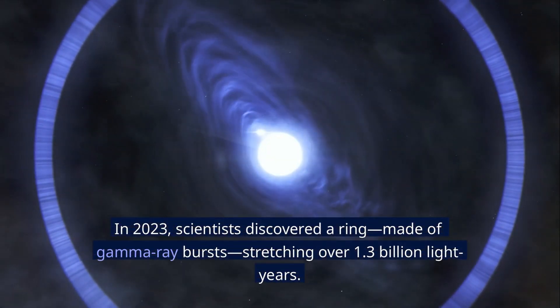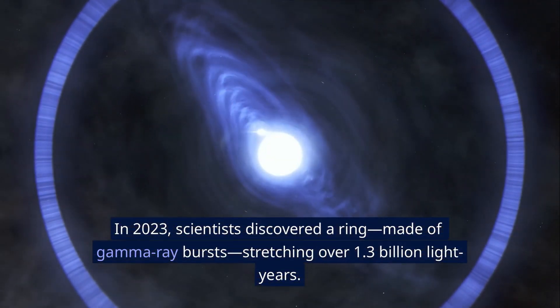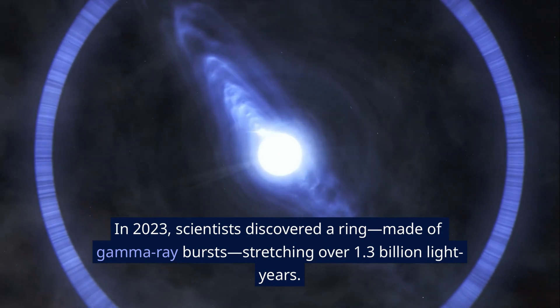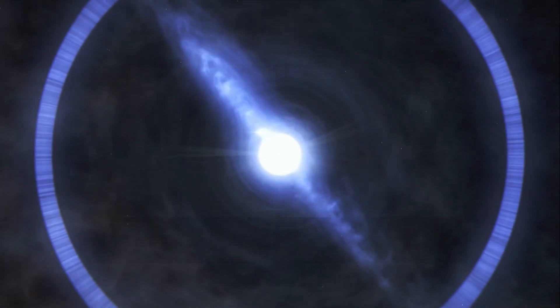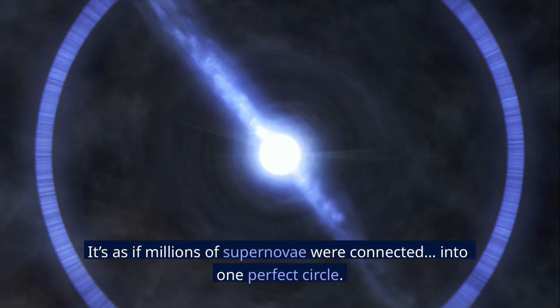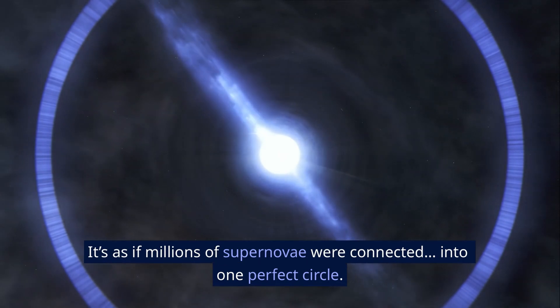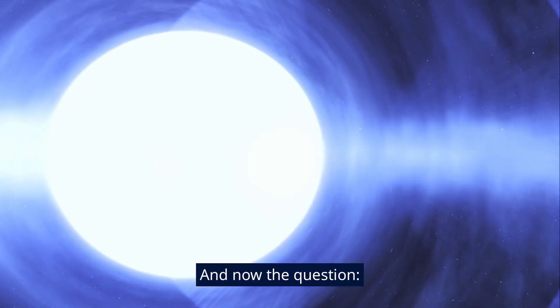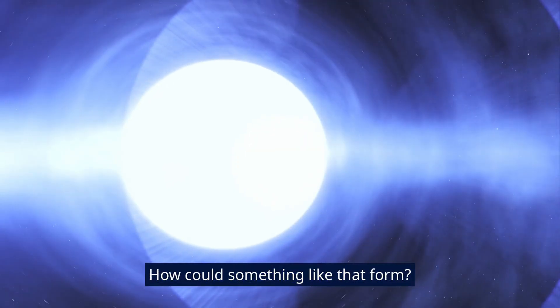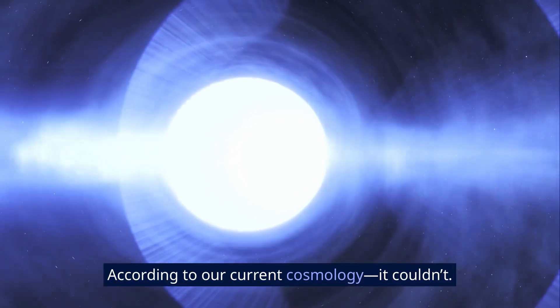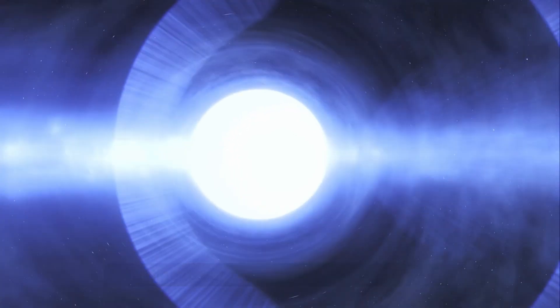In 2023, scientists discovered a ring made of gamma-ray bursts, stretching over 1.3 billion light years. It's as if millions of supernovae were connected into one perfect circle. And now the question: how could something like that form? According to our current cosmology, it couldn't.